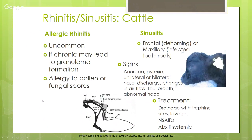Cattle can get allergic rhinitis from pollen or fungal spores — somewhat uncommon, but if chronic it leads to granuloma formation. Sinusitis is more common and occurs with infected tooth roots or improper dehorning. A cross-section of a calf's head shows that the horn bud is very close to the frontal sinus — if we cut too far down and open that sinus, bacteria, fungus, and other organisms can enter and cause infection.